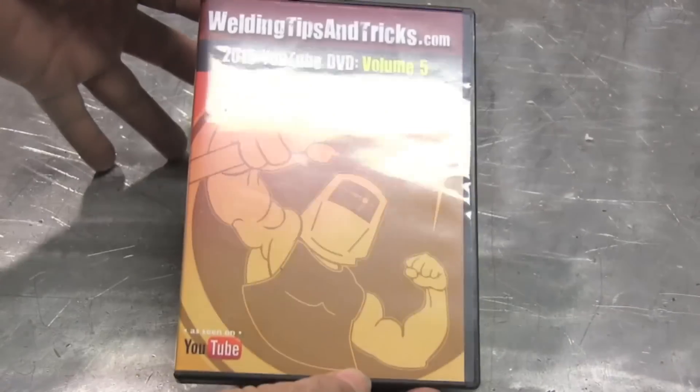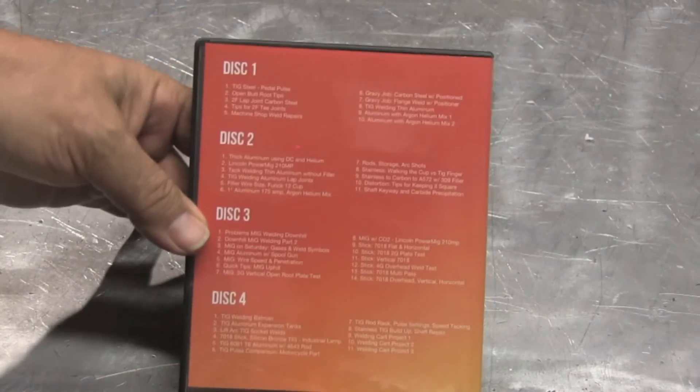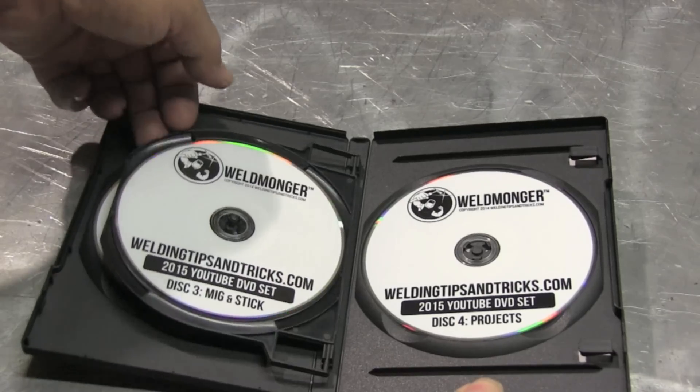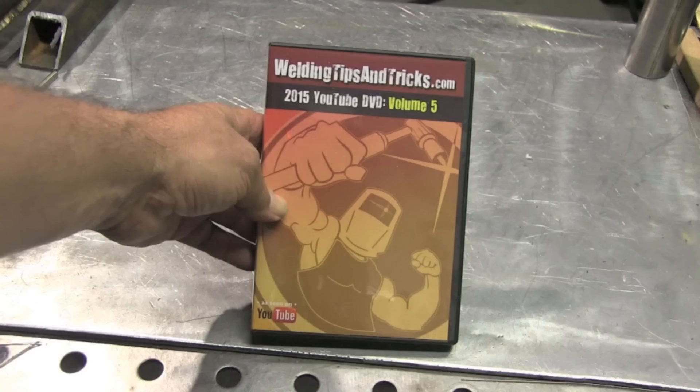Here's what it looks like. It's a four-disc set. It's got a nice table of contents on the back, so you can tell exactly what's on each disc. Lots of arc shots. Lots of information.